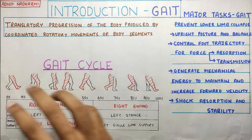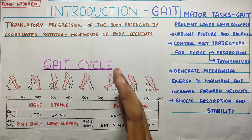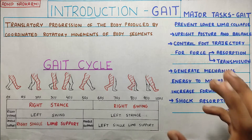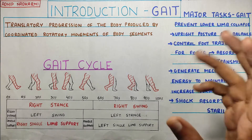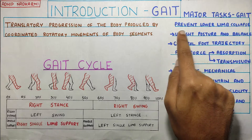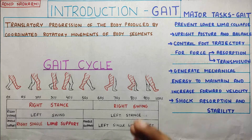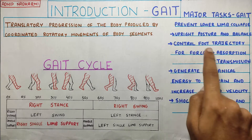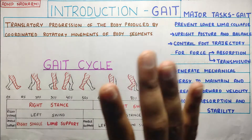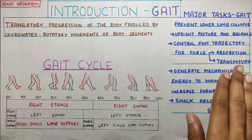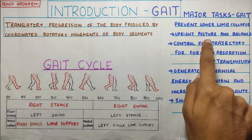Now that we understand what a gait cycle consists of, let's move on to the major tasks covered in gait. These are tasks that must be completed by your body for gait to be proper. First is preventing lower limb collapse — you cannot afford to collapse your lower limb at any point. Second is upright posture and balance — you need both to walk. Third is control of foot trajectory — you need to load the weight of your whole body through your foot correctly, because if your foot goes too far left or right, you can trip and fall.